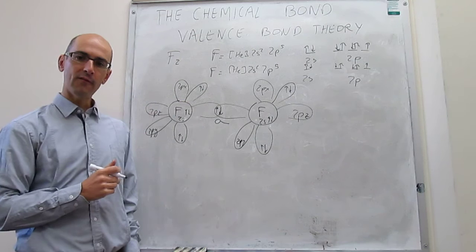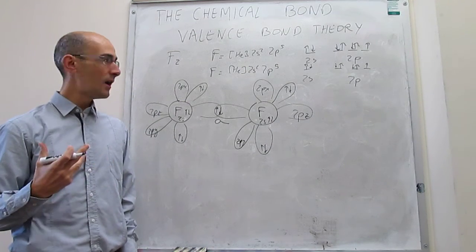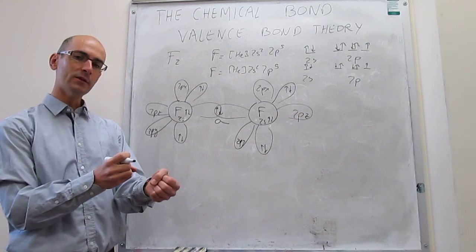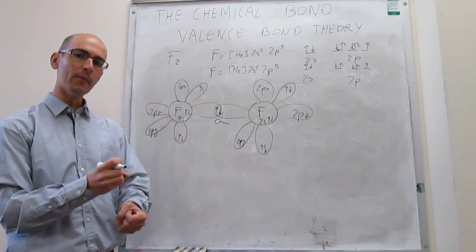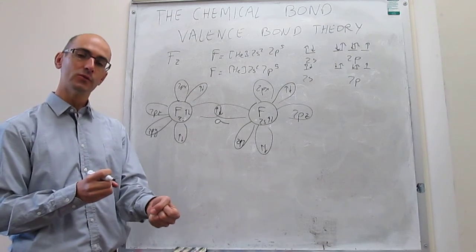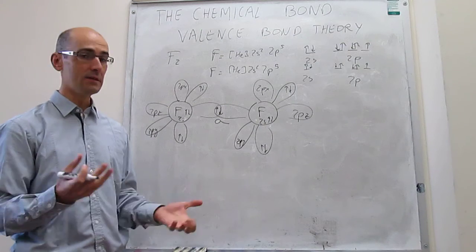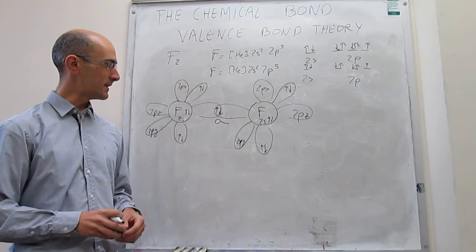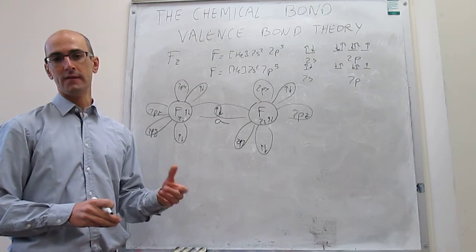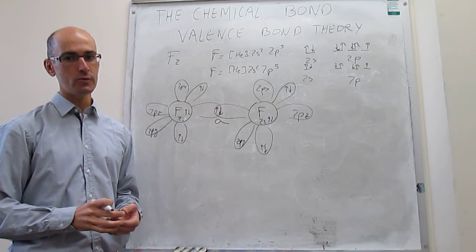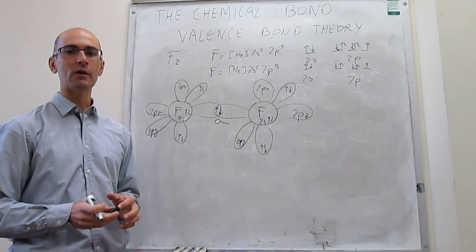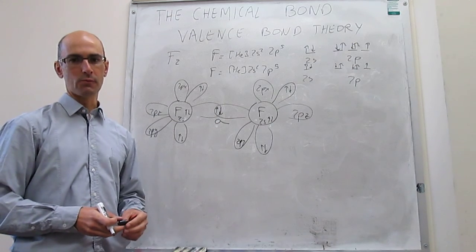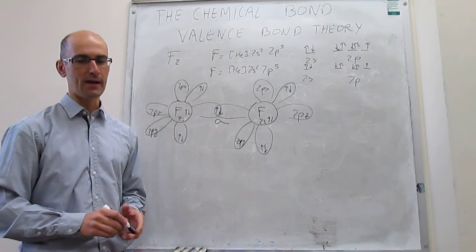That is the valence bond theory diagram for F₂. We understand the F₂ bond as being formed by an overlap between two singly occupied 2p atomic orbitals. In the next video, we'll look at the N₂ valence bond theory diagram, which gives rise to not only sigma overlaps but also pi-type overlaps.